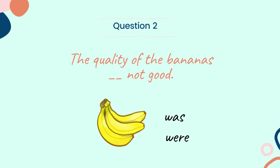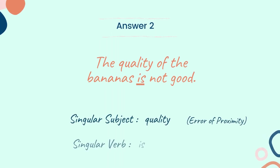Let's look into the next question. Question 2: 'The quality of the bananas dash not good.' Choose the correct verb between the two words: was or were. And the answer is: The quality of bananas was not good. Here the subject 'quality' is singular, so the singular verb is used. This solution reminds us of the concept of error in proximity, where we would have incorrectly chosen 'bananas' as the subject. But here 'quality' is the actual subject.